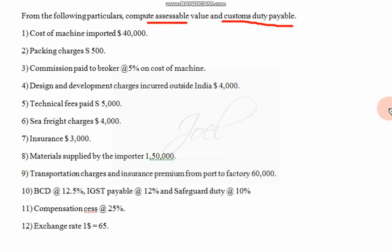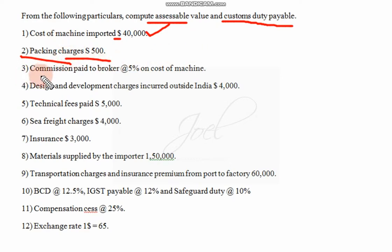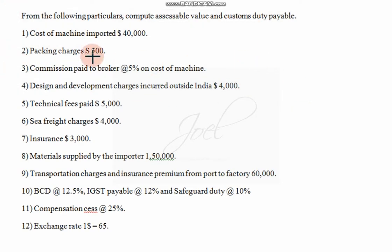Certain information is given; by considering that information we are supposed to solve this. First, the cost of the machine imported is given in dollars — 40,000 dollars. Packing charges we have to consider. Commission to broker is 5% on the cost of the machine, not on the assessable value — on the cost of the machine.